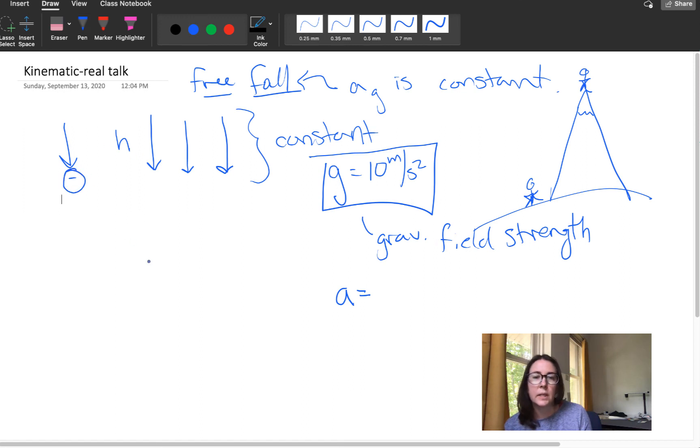So the acceleration is negative g, or you could say it's equal to negative 10 meters per second squared. So g is always positive. It's acceleration that could be positive or negative, depending on your coordinate system.